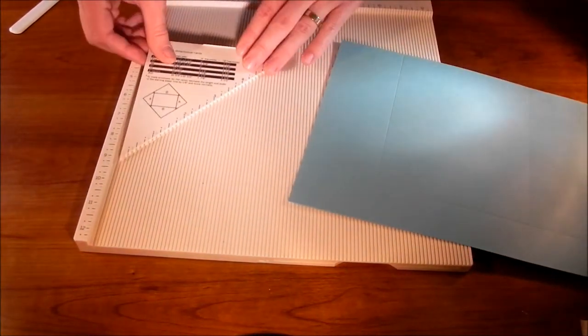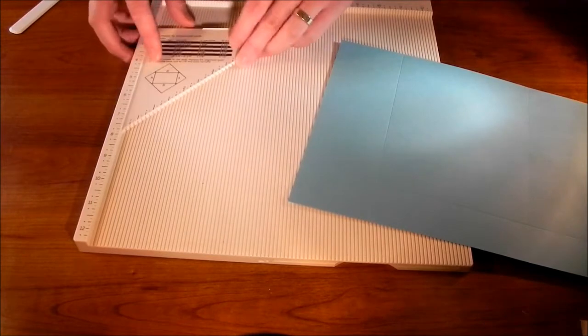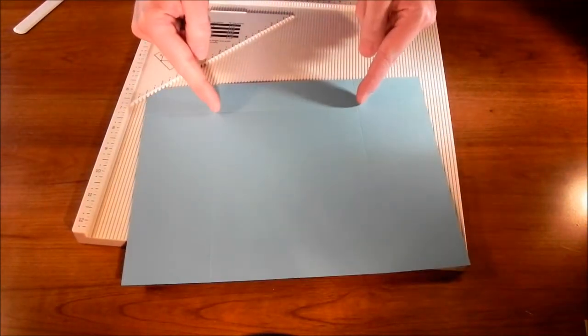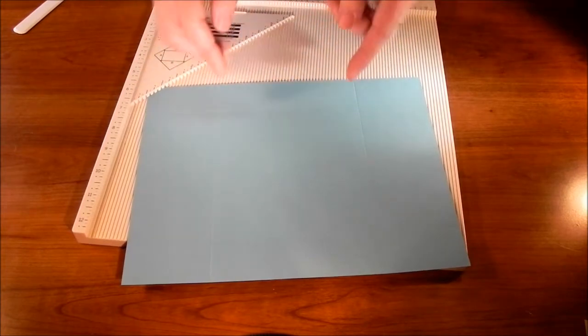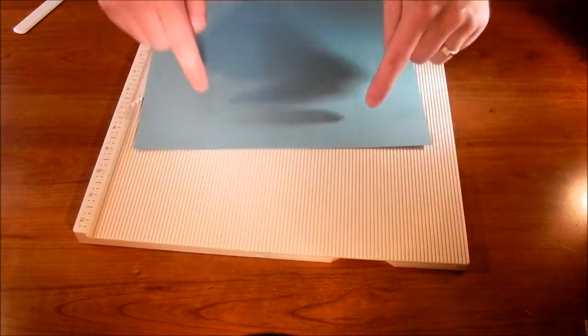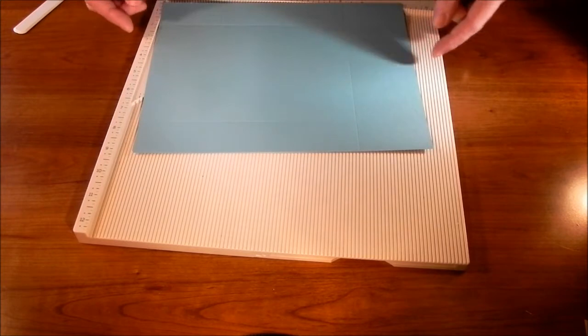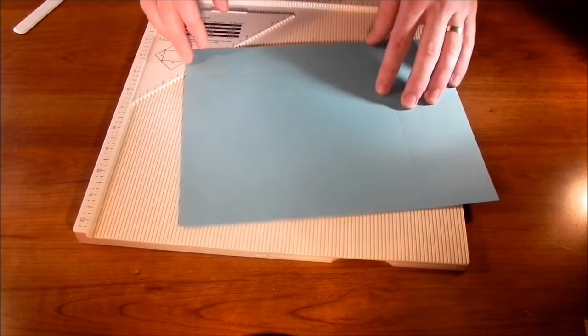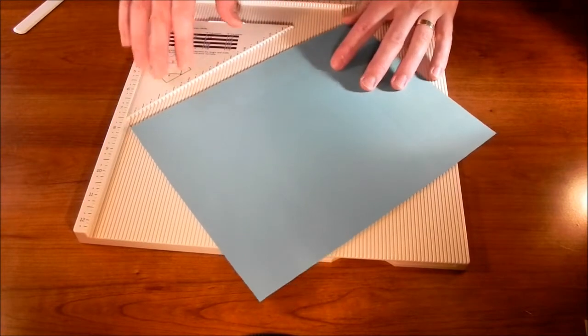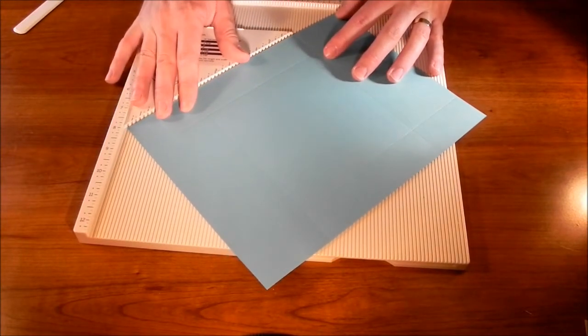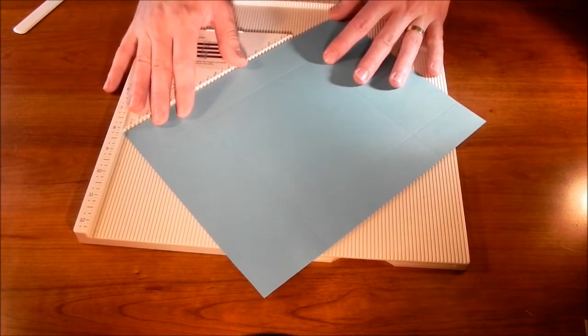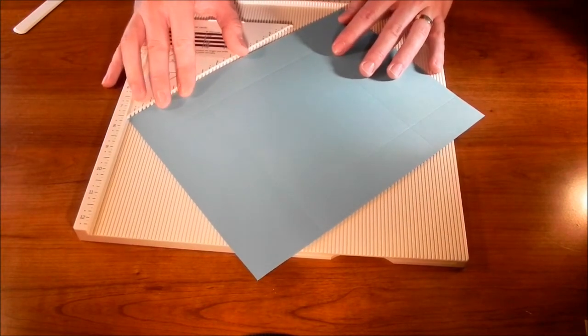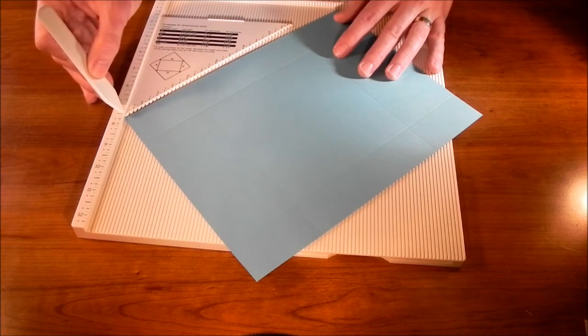Now we're going to take our angle tool and put this in here. And what we need to do is now score some lines here and here, and here and here, because that's going to allow the card to close to make the box. So to do that, we're going to put this cardstock in here diagonally.